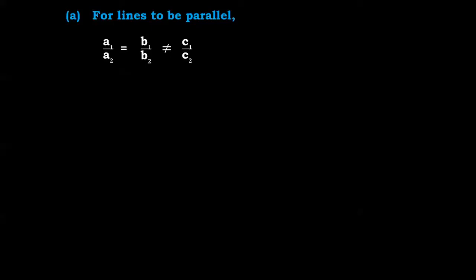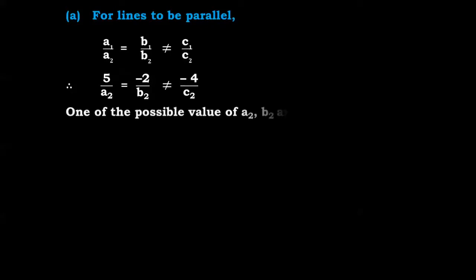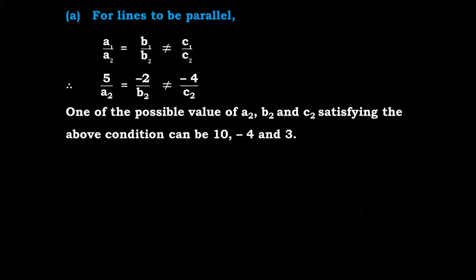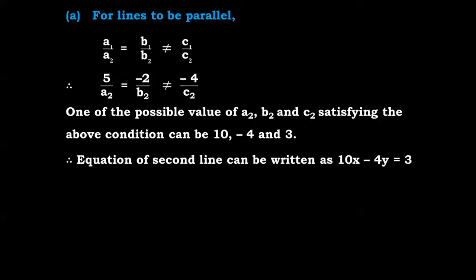Substituting the values: 5/a2 = -2/b2, not equal to -4/c2. We need to find values of a2, b2, c2 satisfying this condition. One possible set of values gives the equation of the second line as 10x - 4y = 3.